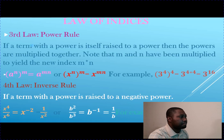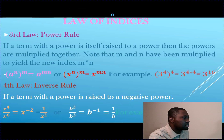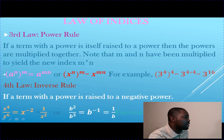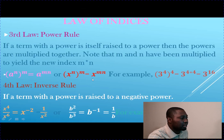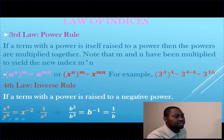The third law is the power rule. If a term with a power is itself raised to a power, then the powers are multiplied together. So base a to the power of n, raised to the power of m, equals a to the power of m times n. For example, 3 to the power of 4, raised to the power of 4, equals 3 to the power of 4 multiplied by 4, which is 3 to the power of 16.